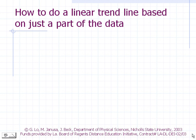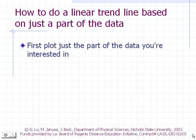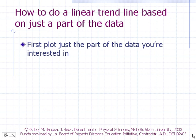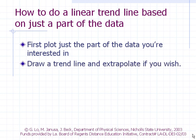How to do a linear trendline based on just a part of the data: First, plot just the part of the data you are interested in. Draw a trendline and extrapolate if you wish. Then add the entire set of data as a second set of XY values.